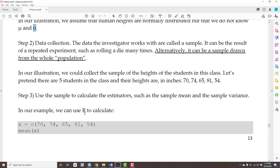Step two, data collection. The data the investigator works with are called a sample. It can be the result of a repeated experiment, such as rolling a die many times. Or it can be a sample drawn from the whole population. In our illustration, we could collect the sample of heights of the students in this class. Let's pretend there are five students and their heights are 70, 74, 65, 81, 54.